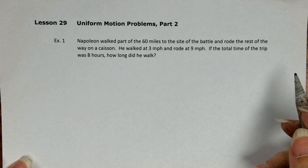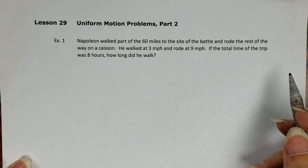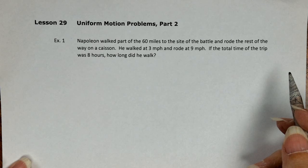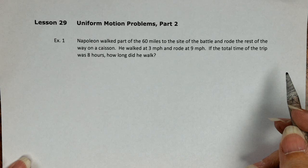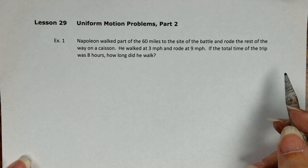Napoleon walked part of the 60 miles to the site of the battle and rode the rest of the way on a caisson. He walked at 3 miles per hour and rode at 9 miles per hour. If the total time of the trip was 8 hours, how long did he walk?